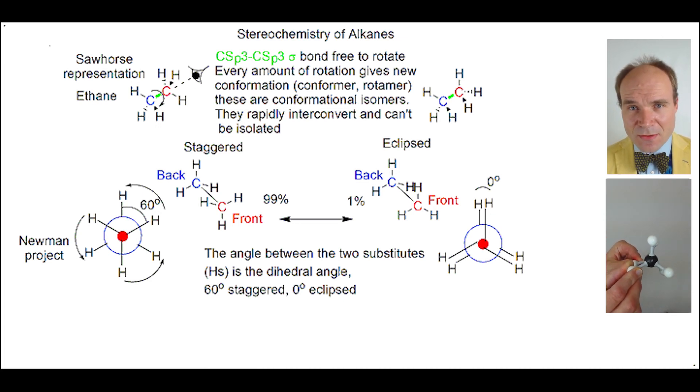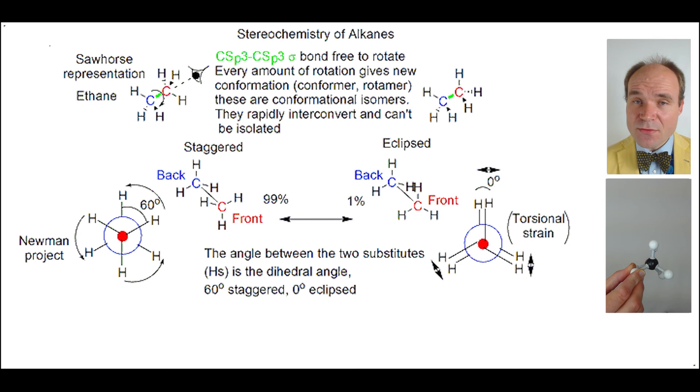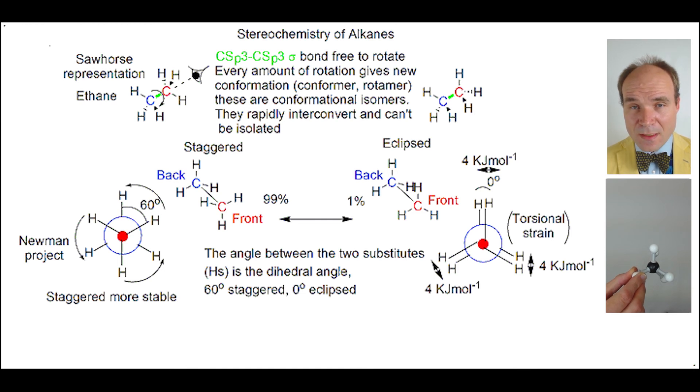An eclipsed molecule has extra torsional strain. And when you have two hydrogens, that will produce torsional strain of four kilojoules per mole. There are three such torsional strains in our ethane molecule that is eclipsed.